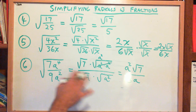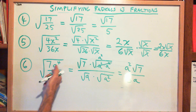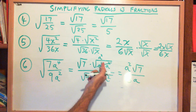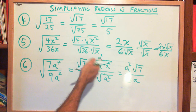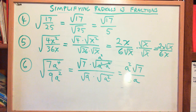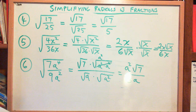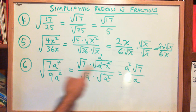I write everything out — nothing in my head, nothing left to chance — so I can go back and check my work. Is the square root of 7a to the 4th the same as the square root of 7 times the square root of a squared, times a squared? Yes, it is. If I don't write these things out and just try to write the final answer, there's no way to check my work quickly.